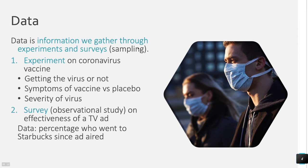So what is data more specifically? It's the information that we're going to gather, and we gather it two ways: through experiments and through observational studies — the most common type of observational study being surveys. An experiment might be, for example, testing the effectiveness of a coronavirus vaccine: do subjects get the virus or not, what are the symptoms, did they receive the vaccine or the placebo, how many times were they hospitalized, and how severe were their symptoms?